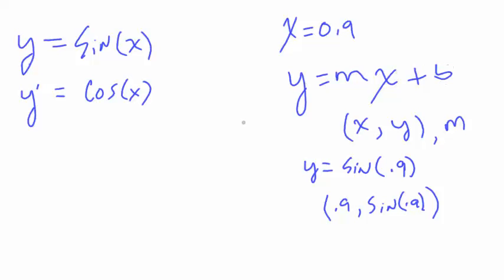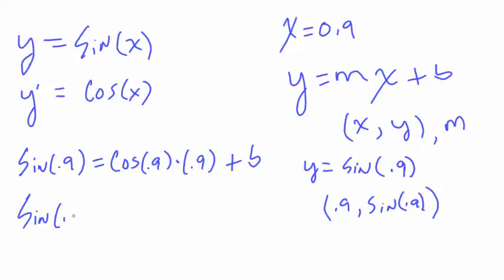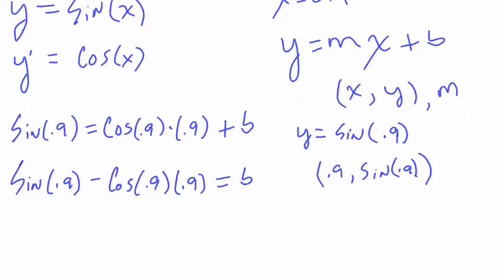This is going to give us the slope when we plug in 0.9 into it. Let's plug everything in that we got here. So we know what y is. Y is sine of 0.9, and that's equal to, this right here is going to give us the slope, cosine of 0.9, and then our x value obviously is 0.9, and then we have plus b. So we're using exact values here.